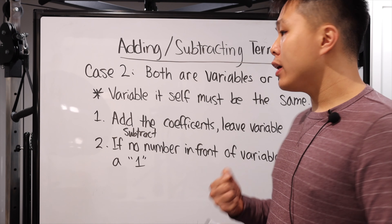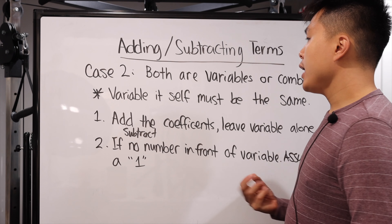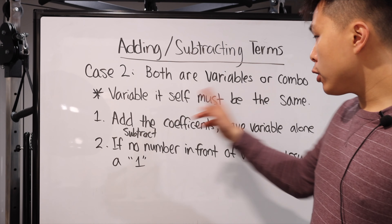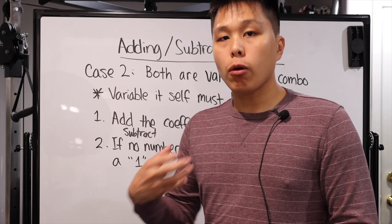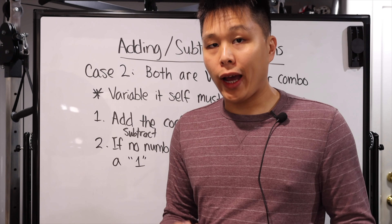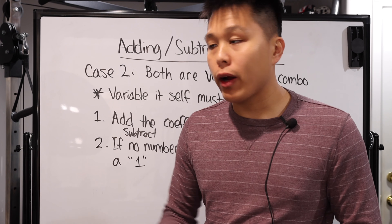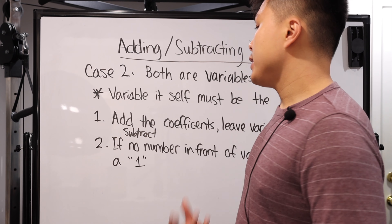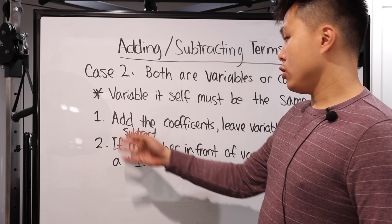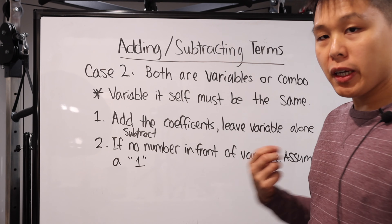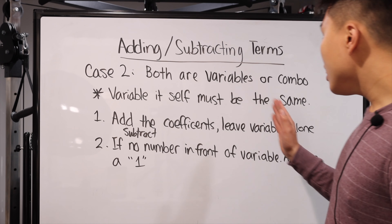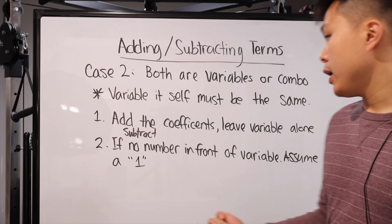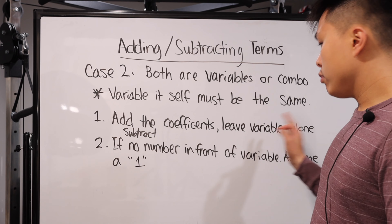Case two is where it's a little more interesting — when both are variables or some combination of a number and variable. The variable itself must be the same. Once you meet that criteria, there are two steps. Step one: add or subtract the coefficient — basically the number in front of the variable — and leave the variable alone. That's one of the common mistakes I'm going to talk about in a bit.